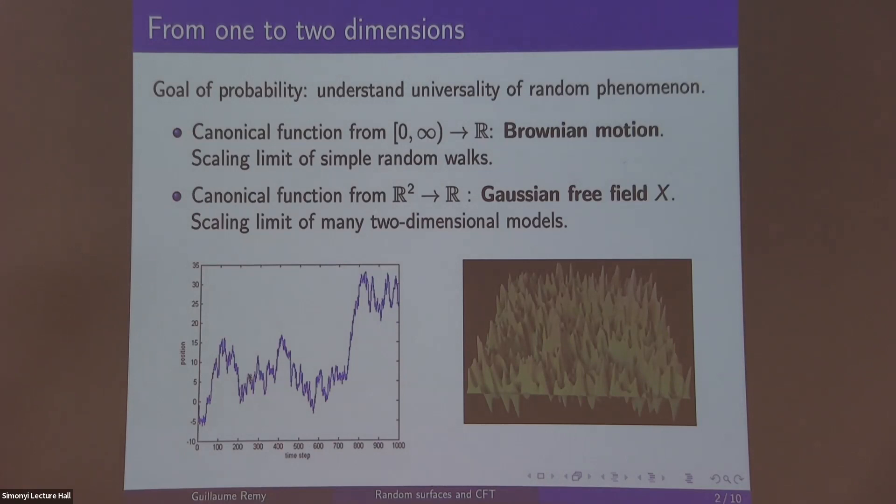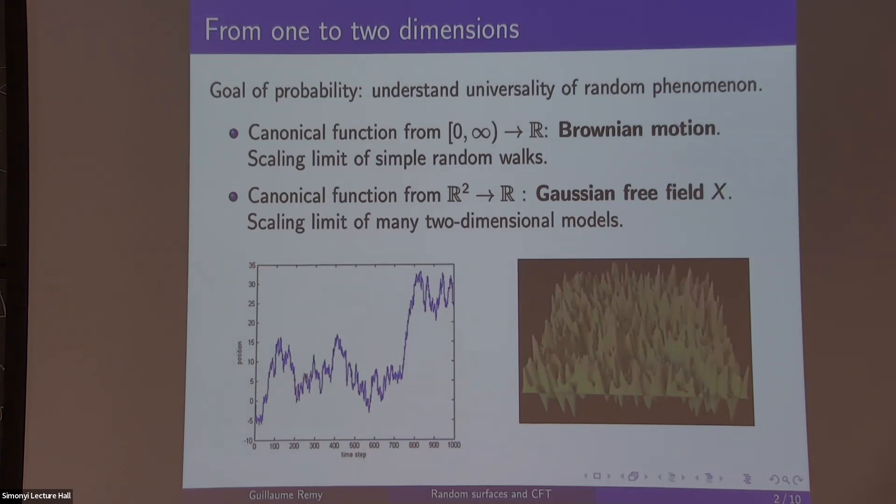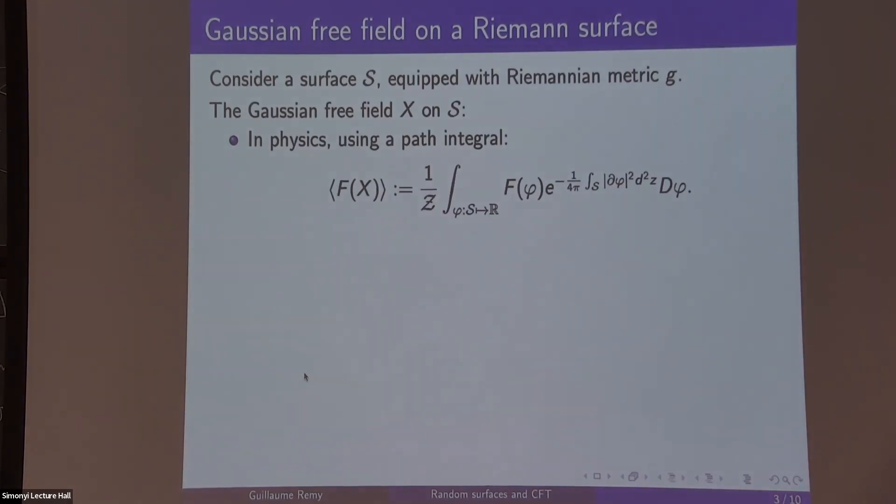Then the most canonical random function here is what's called the Gaussian free field. It also appears in many contexts. There you have a simulation of it on the bottom right, and it will be really the building block of everything we do.